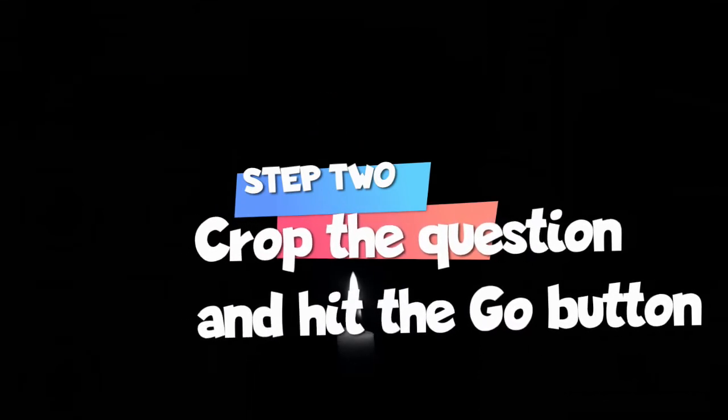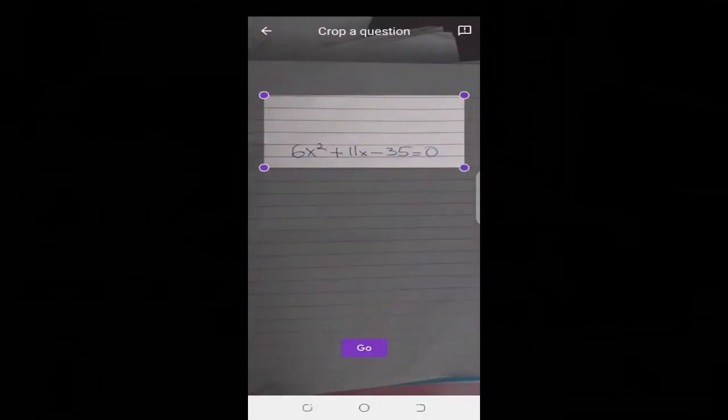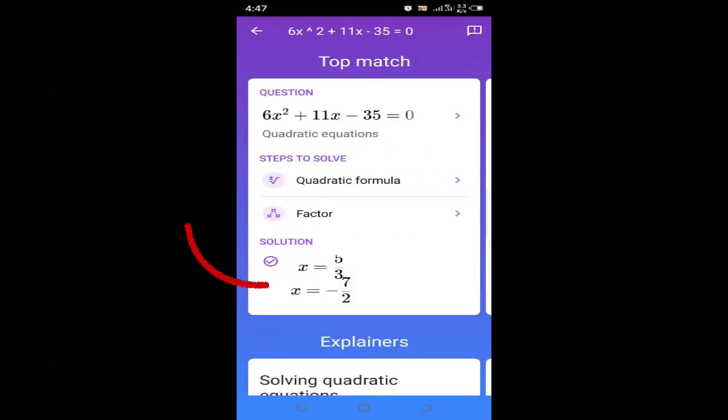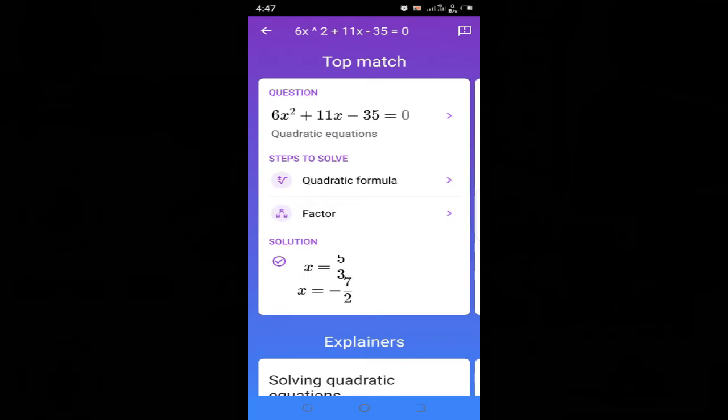Step 2: Crop the question and hit the Go button. Here is your answer. You can see a step-by-step guide on how the solutions were derived here.